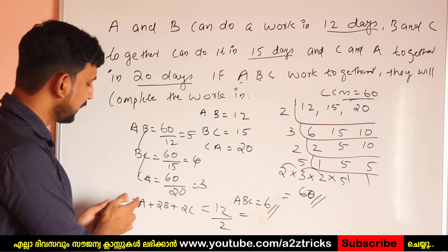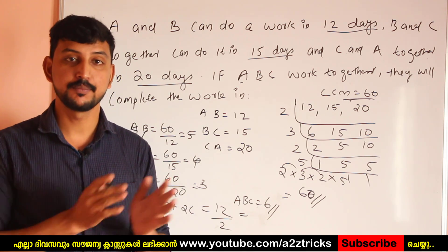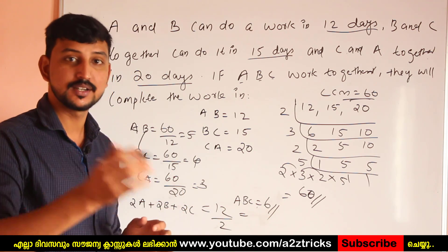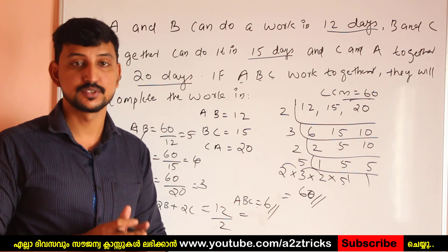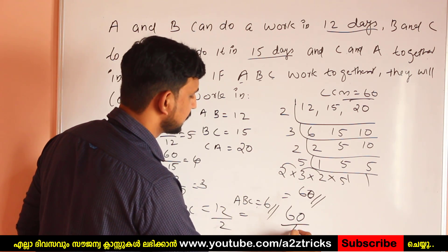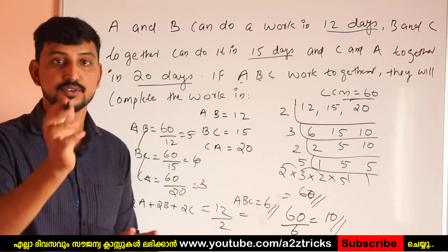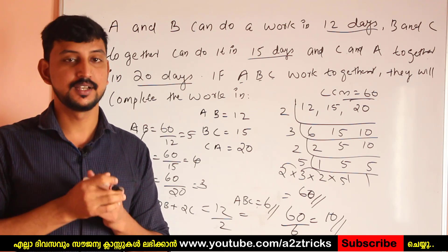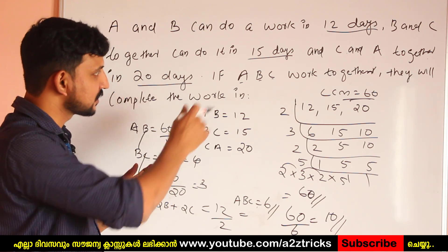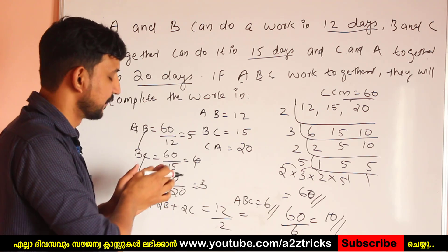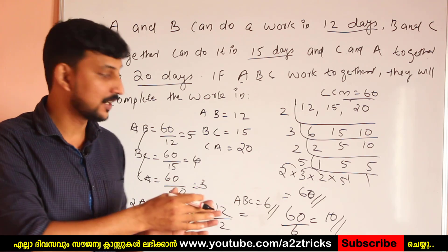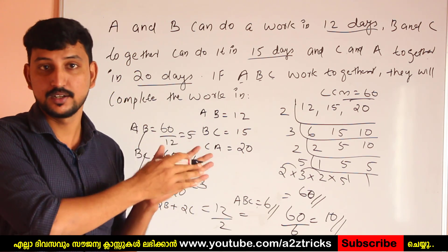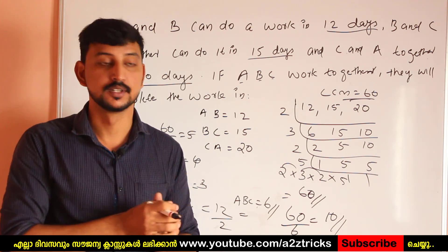Dividing, 2A plus 2B plus 2C gives us 1A, 1B, and 1C combined efficiency. For A, B, and C working together, the efficiency per day is 6. So the number of days to complete the work is total work divided by 6, which gives us the answer.